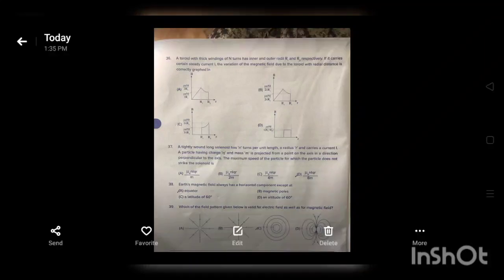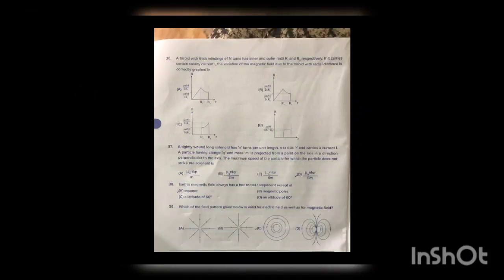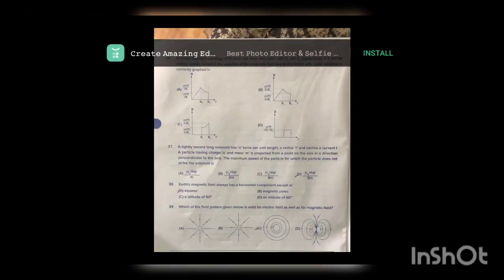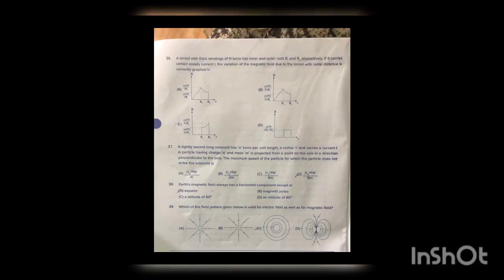Question number 39: the correct option is C — this figure is the correct figure for this question. Question number 38: option B is your correct answer, relating to magnetic poles.